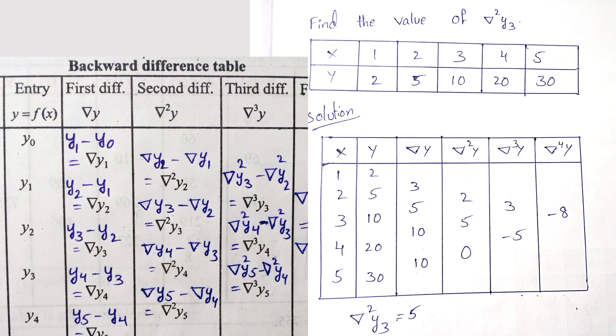Nabla square y3 value. Nabla square y values, first value is nabla square y2 value. Next value is nabla square y3 value. Okay, nabla square y3 value is 5. We need to find out nabla square y3 value, so the answer is 5. Okay, clear. This is backward difference find out.